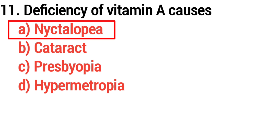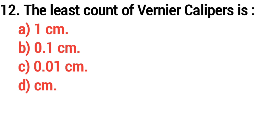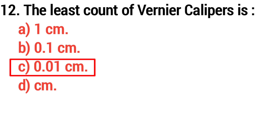Question number twelve: the least count of vernier calipers is — the answer is option C, 0.01 cm.